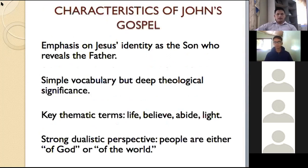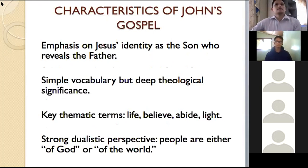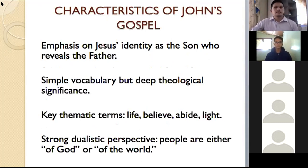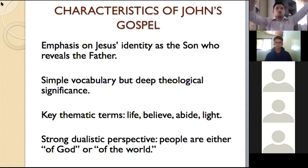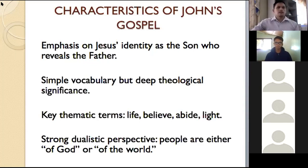The first characteristic in the book of John is the emphasis on the identity of the Son who reveals the Father. Second, simple vocabulary but deep theological significance. Third, key thematic terms: life, believe, abide, light — simple words. And a strong dualistic perspective: people are either of God or of the world — you have this dual picture of people of God and people of the world.